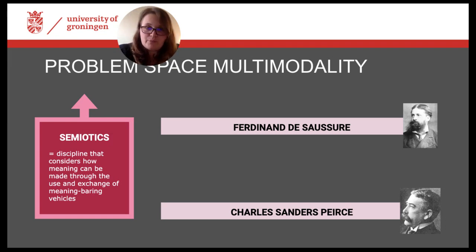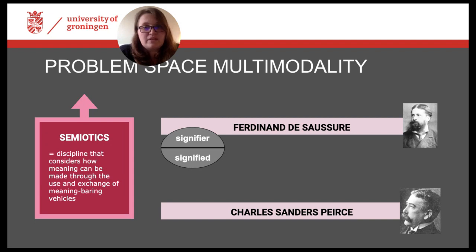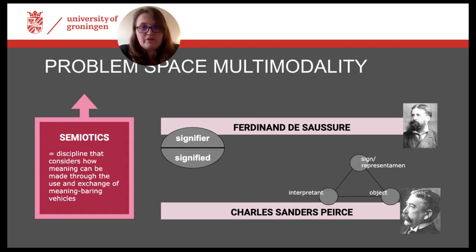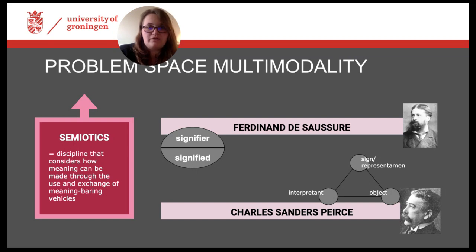Both Saussure and Peirce developed notions and definitions of the sign and of the processes of sign making. Saussure focuses entirely on verbal signs, which he describes in a binary model with the signifier and the signified as the two sides, and their relation being arbitrary and conventional. Peirce, on the other hand, developed a three-way model of the sign, including also the level of an interpretant, with precise ideas about active sign making and interpretation. Peirce is also very famous for his distinction of several sign types, among which those of the icon, the index, and the symbol are very popular.